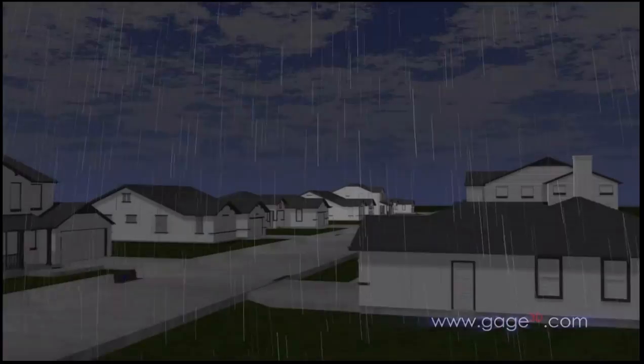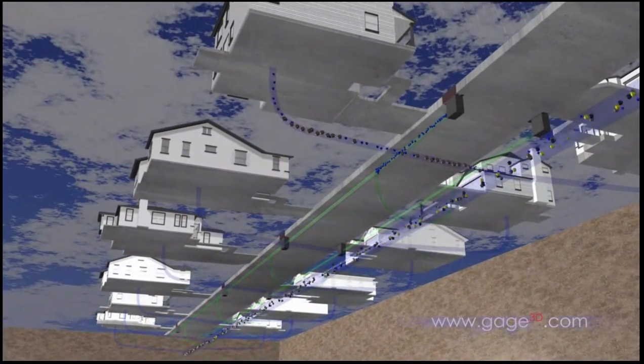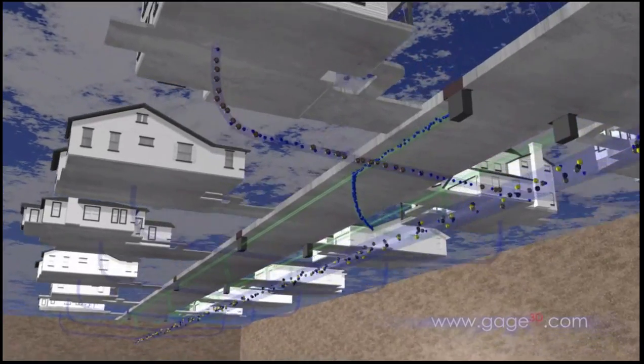When you take a shower or flush the toilet, what happens to the water? Water and waste washed down the drain of homes, businesses, and industrial facilities flows through a network of pipes called a collection system.